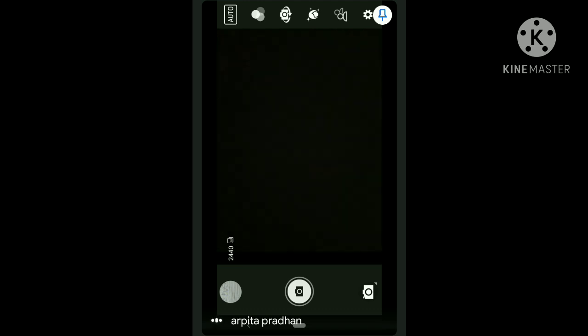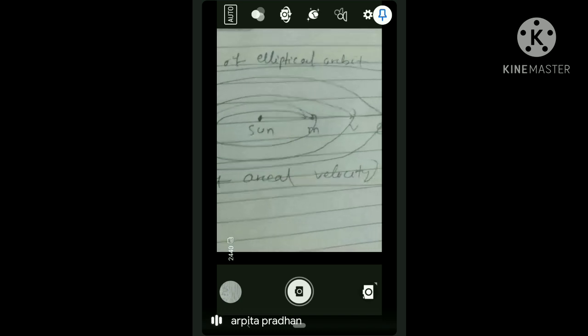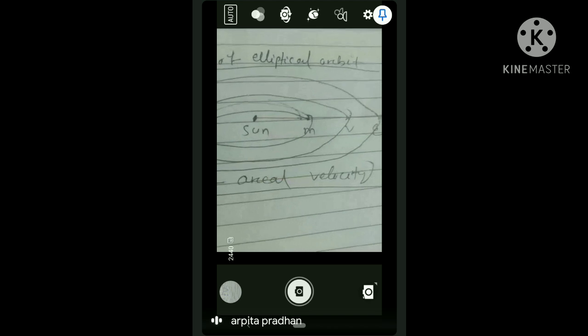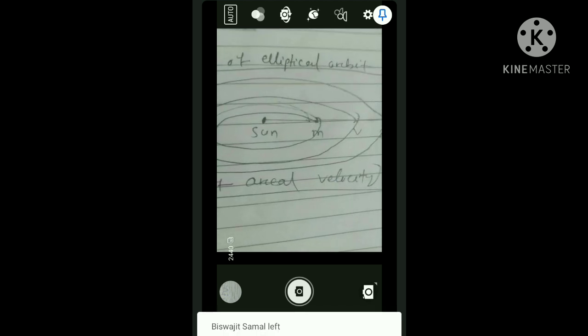So this is the second law. This is the way that the planet moves around the sun in such a way that its aerial velocity is constant. What do we mean by constant? Constantly rotate.